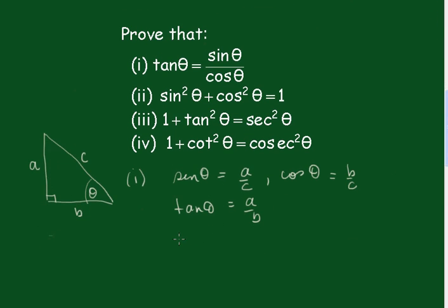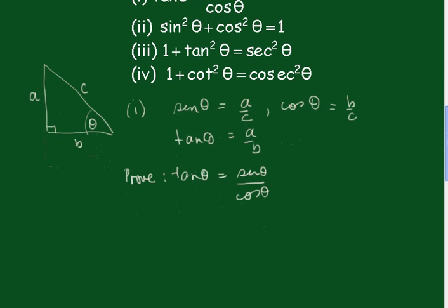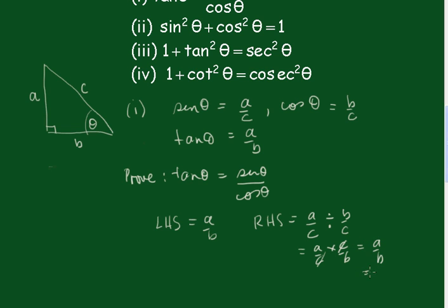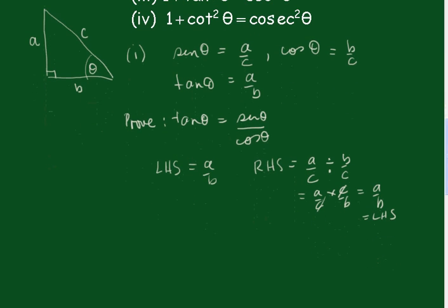Now, tan θ equals sin θ over cos θ — that's what we have to prove. The left-hand side is equal to A over B. The right-hand side is sin θ, which is A over C, divided by B over C. That equals A over C times C over B; the C's cancel out and you get A over B, which equals the left-hand side. Therefore, tan θ equals sin θ over cos θ.